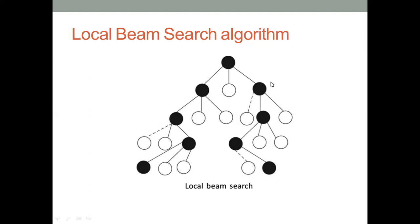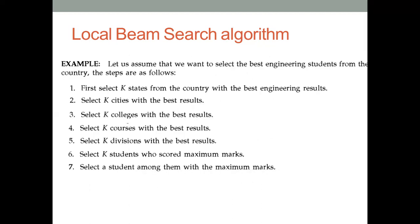Then with that, again, we are going to proceed at each level of the algorithm. We are going to choose the best successors and keep on going until a goal state is found. This is called the local beam search algorithm.